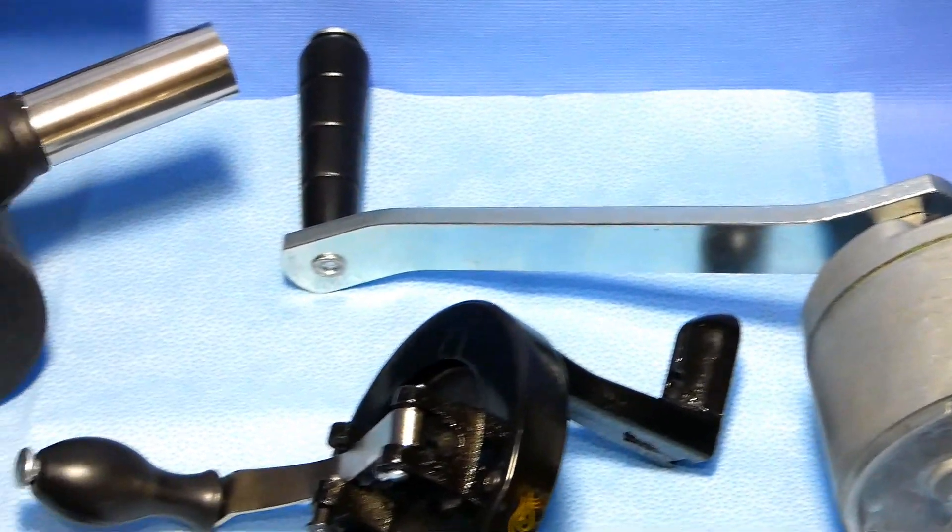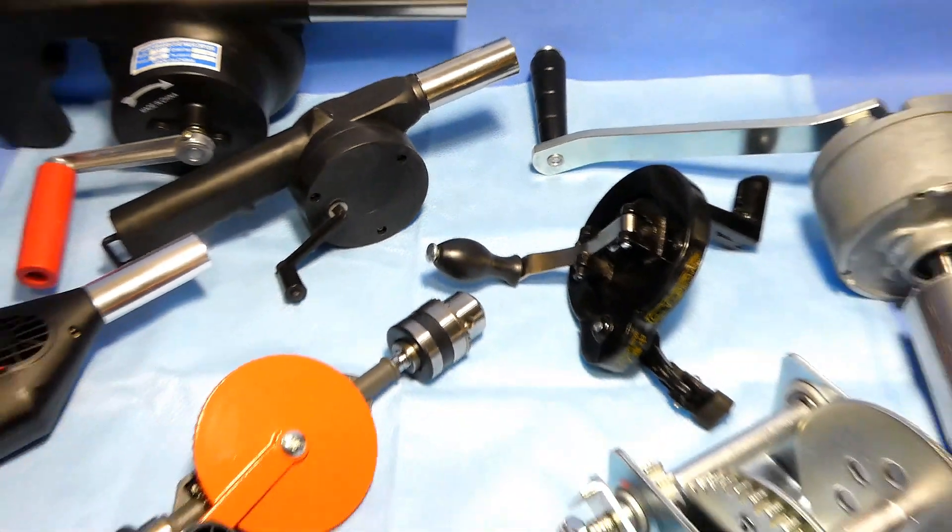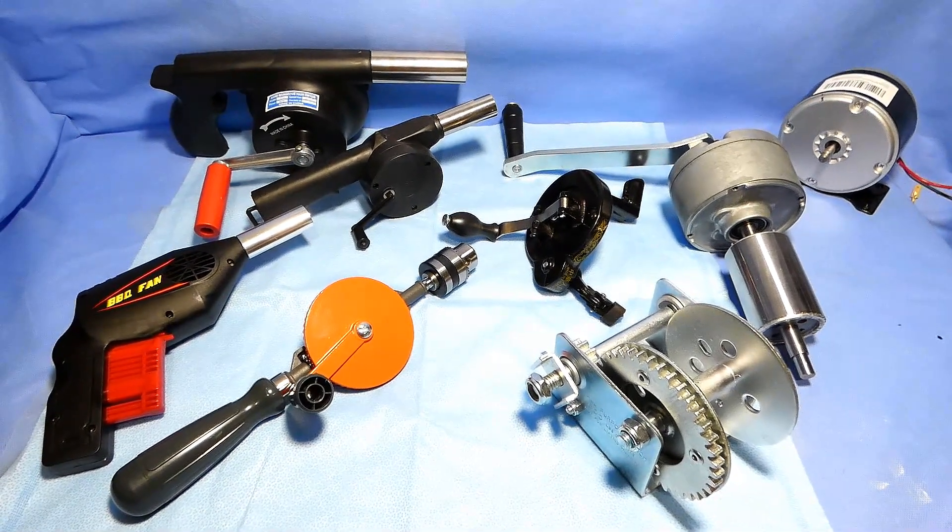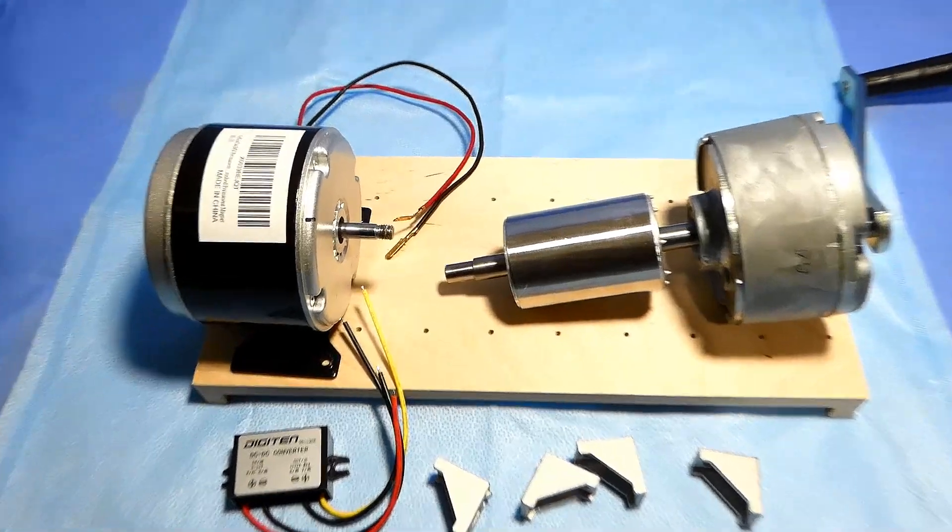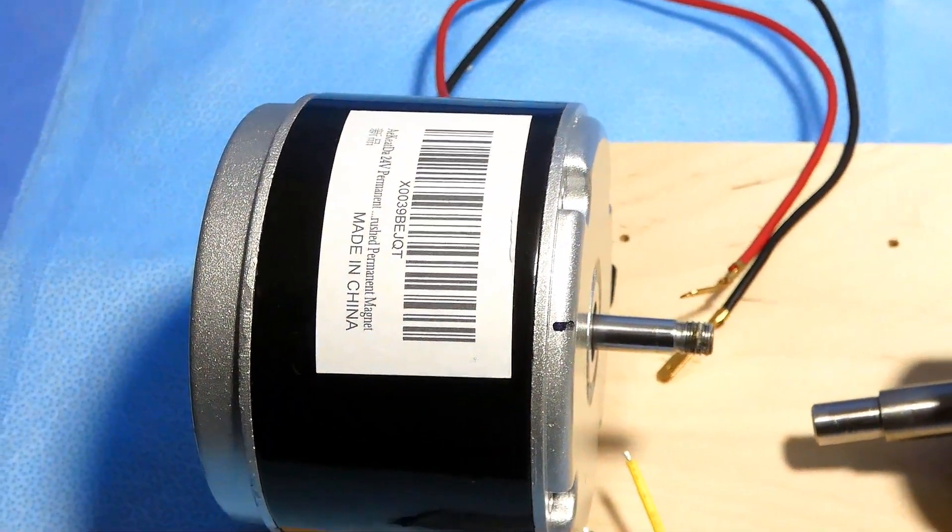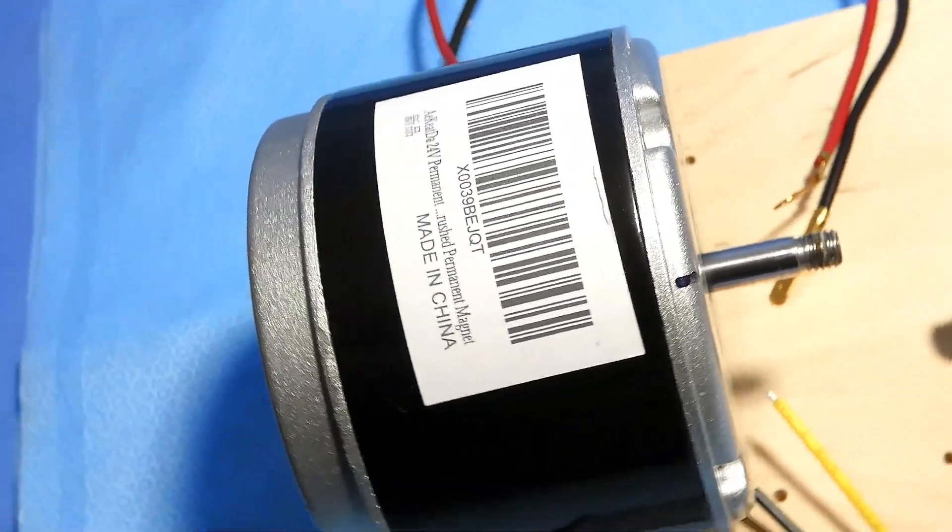This is how I'm going to assemble the hand crank generator using a permanent magnet DC motor and gear system from an AC motor.